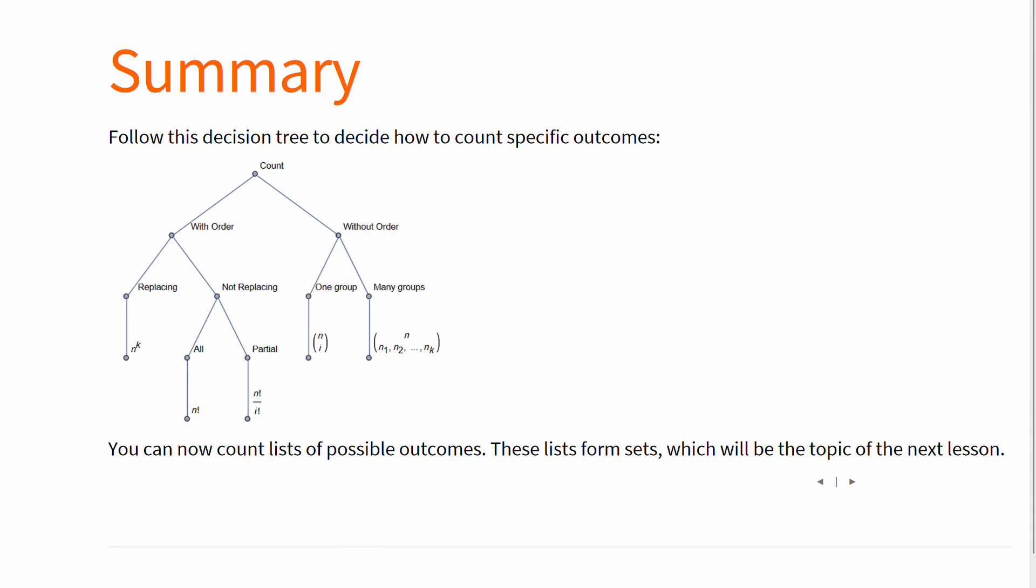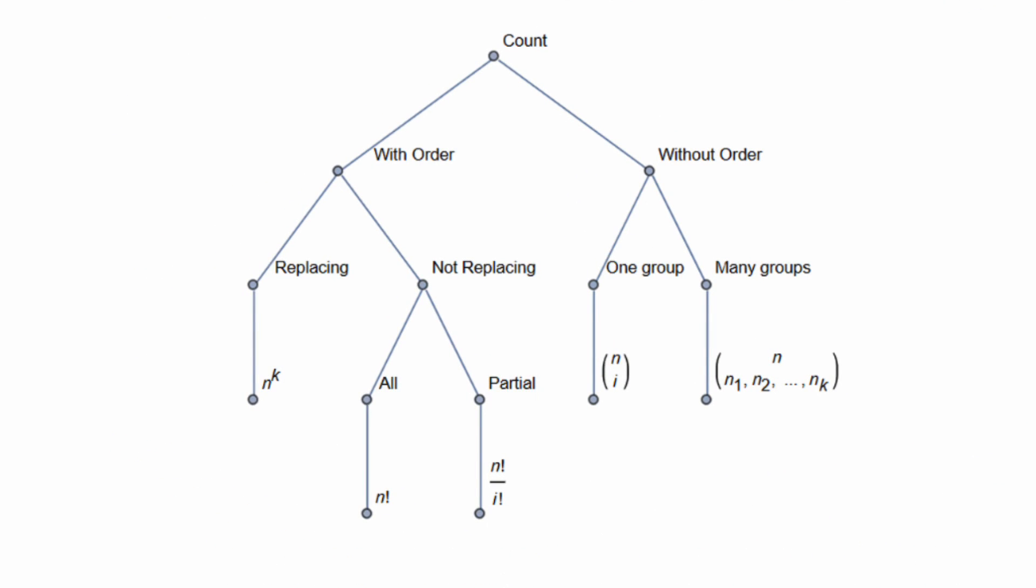So as a quick summary, how does one count? Well, let's consider with order and with replacing first. That would mean simultaneous experiments, which is simply n power k. Now with order but without replacing, then we use n factorial in a complete or partial way. Now without order, you're probably choosing groups, so use either the binomial for two groups or the multinomial for more than two groups.